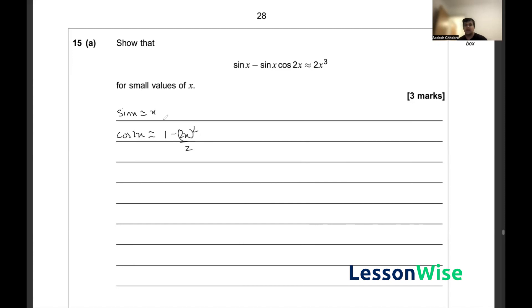We can go ahead and use these approximations in our equation. If you just substitute those in, this becomes x minus x times 1 minus 2x squared by 2.